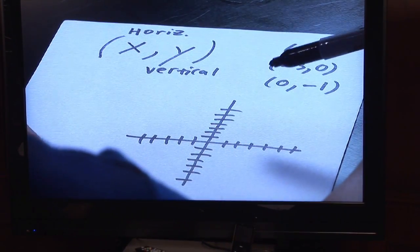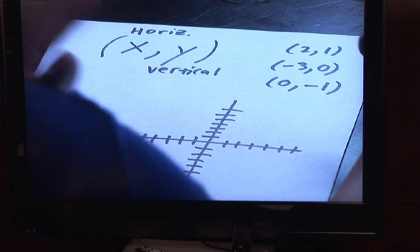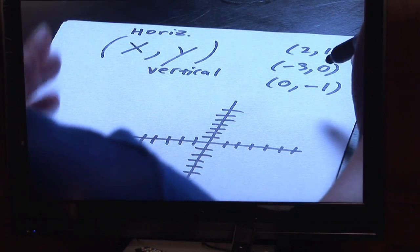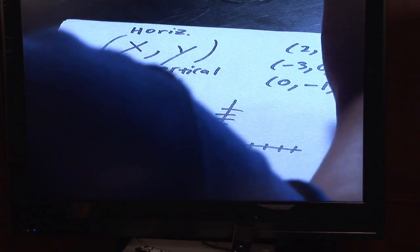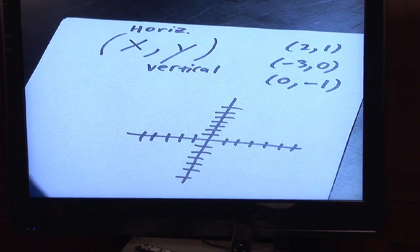Y tells you what direction you go vertically, up or down. And so what we'll do in the next minute and a half or so is figure out what these individual numbers mean, but understand that the X number always comes before the Y number.